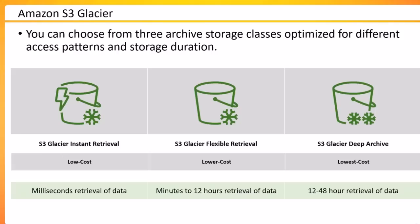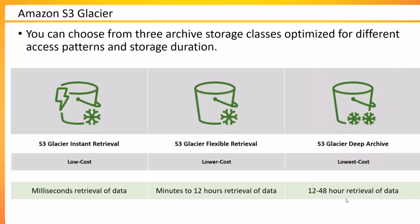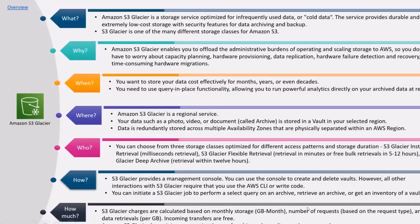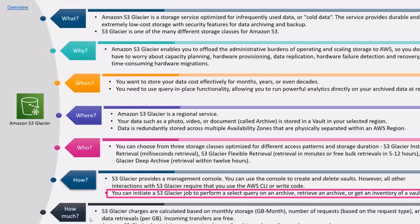The last and cheapest option is Glacier Deep Archive — the lowest cost storage, just a few dollars for 10,000 GB of data, but you may have to wait 12 to 48 hours for retrieval. You also have access to a service summary card listing the basics of Amazon S3 Glacier: what it is, that it is a regional service, the different storage tiers, creating things from the management console, using a job to query archives or get an inventory of a vault, and the capacity charges you pay. That is all about Glacier. I hope you learned something new.